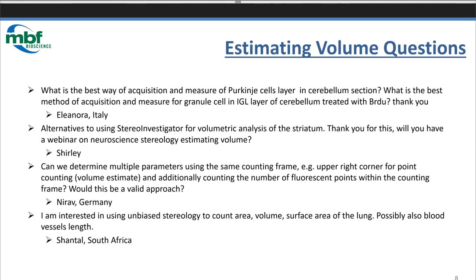Nirav from Germany asks: can we determine multiple parameters using the same counting frame? For example, use the upper right corner for point counting and use the counting frame for something else — is that a valid approach? When we get to our third category today, we're going to see an example of a probe where we mark points for volume and mark intersections for surface. So yes, there are some probes that have you mark more than one thing, and we're going to see an example of that today.